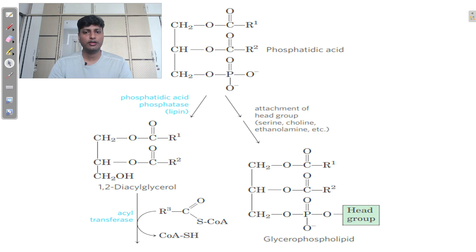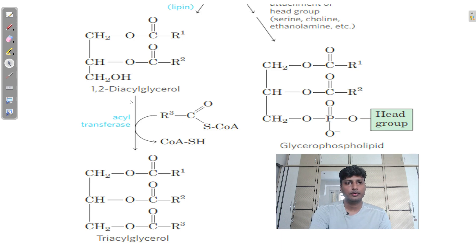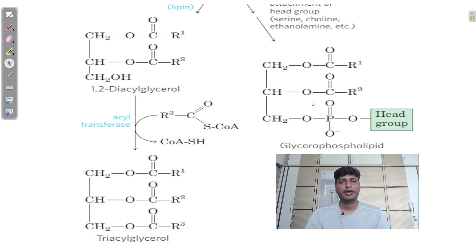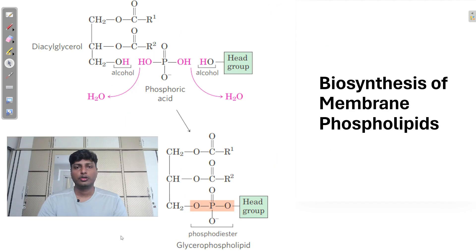The head group attached to the third carbon can be serine, choline, ethanolamine, etc. As you can see in the diagram, 1,2-diacylglycerol is converted into triacylglycerol by attachment of a third fatty acid on the third carbon. Alternatively, attachment of a particular head group leads to a different type of phospholipid depending on the type of head group attached.